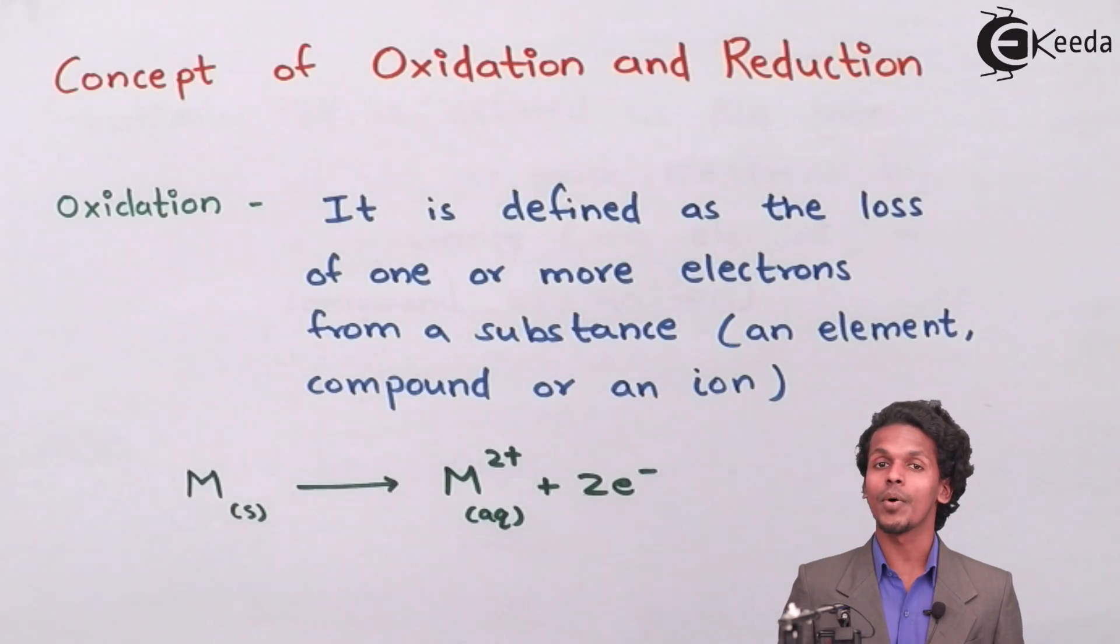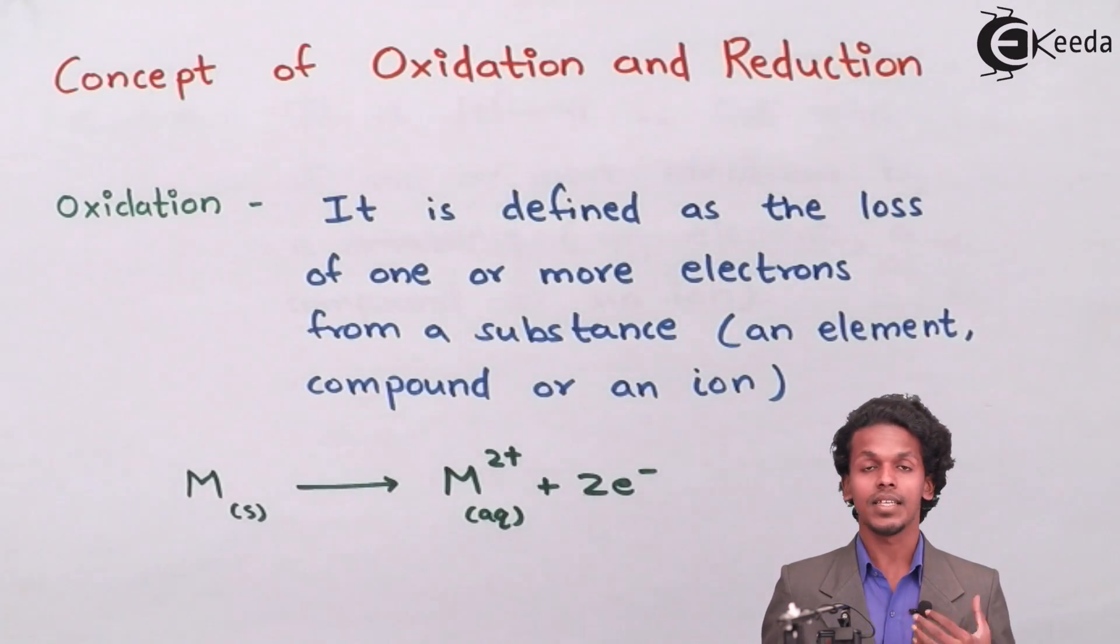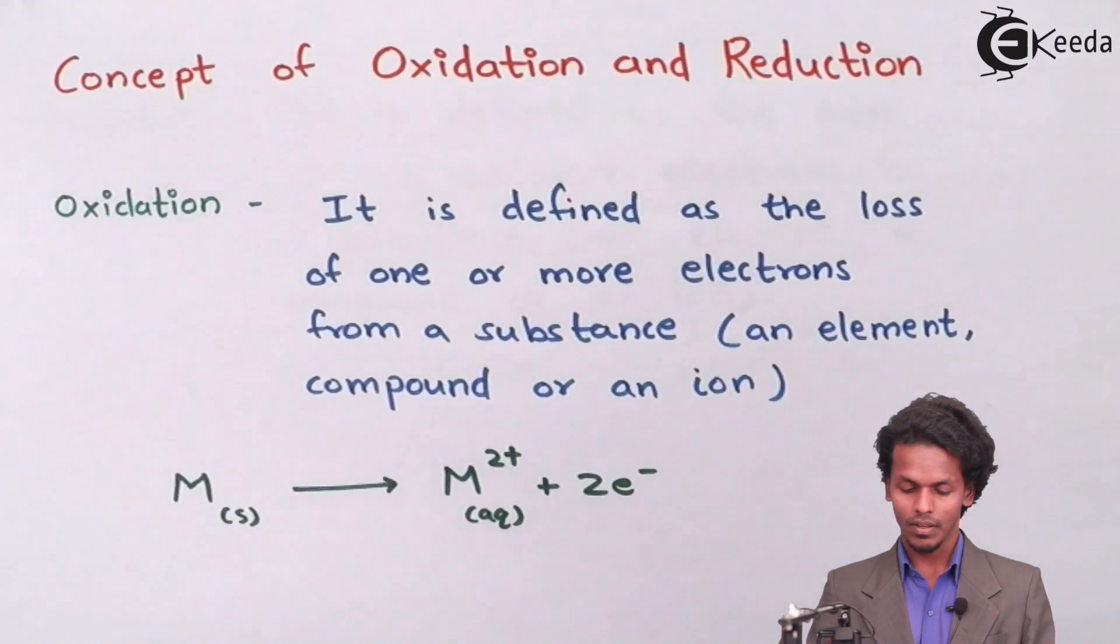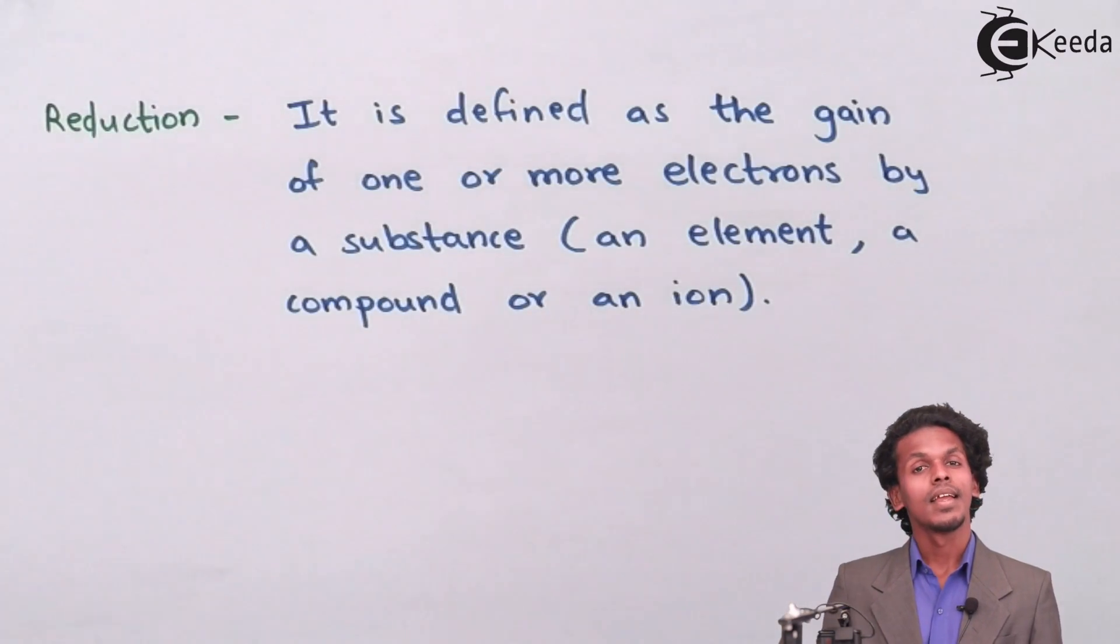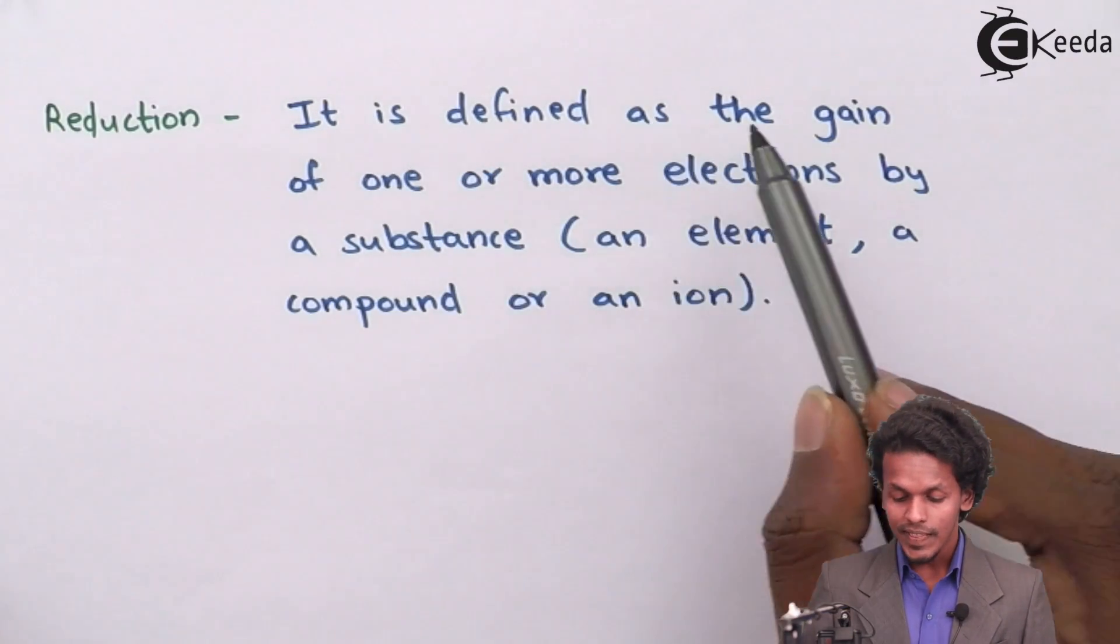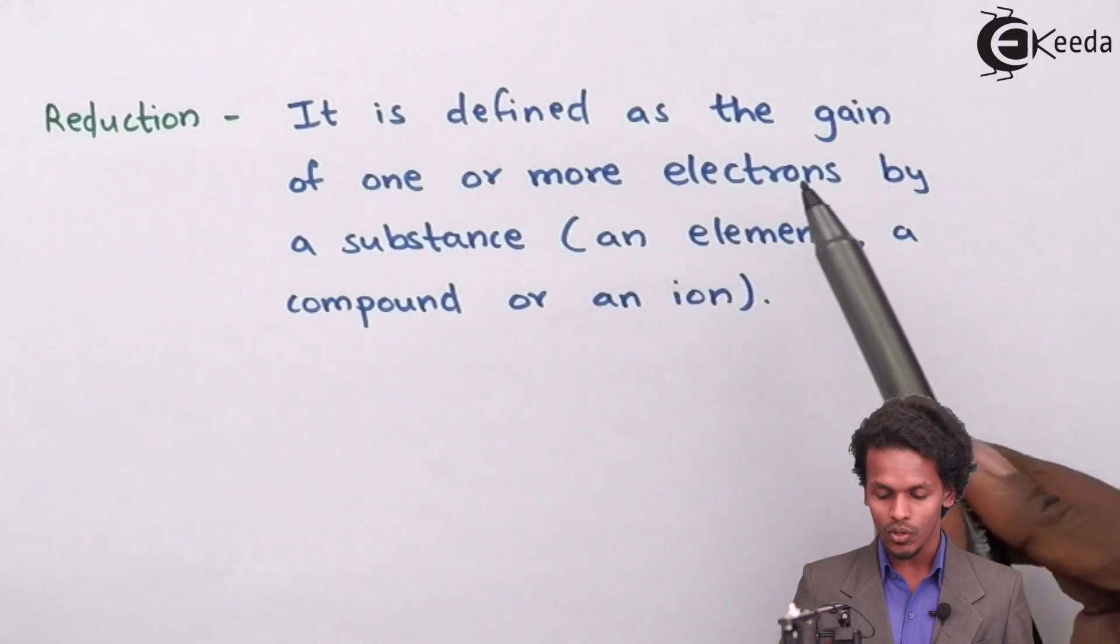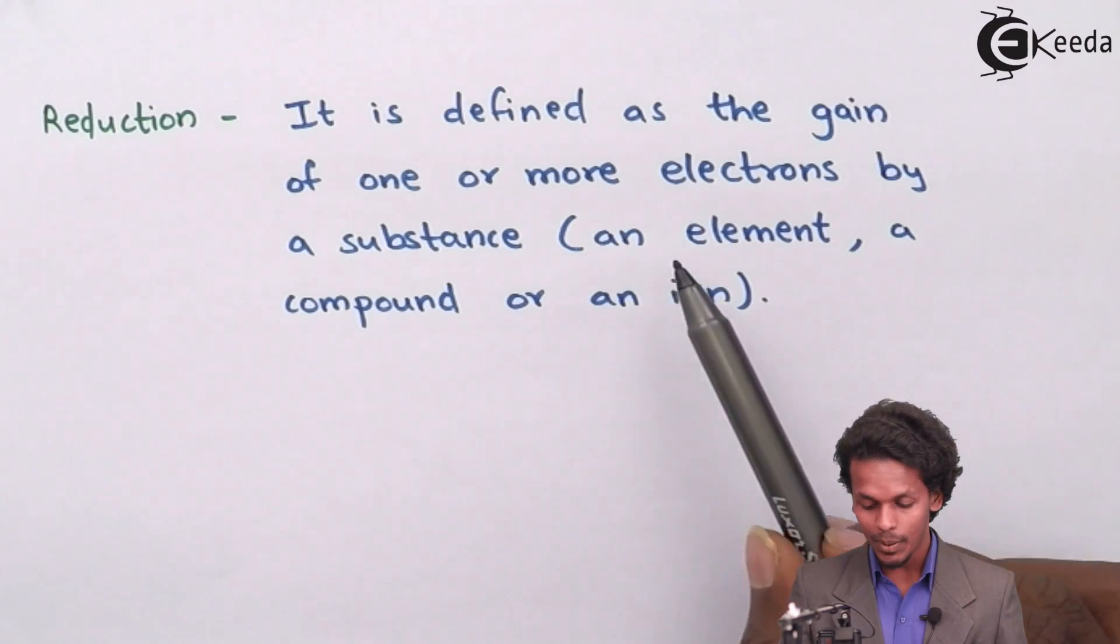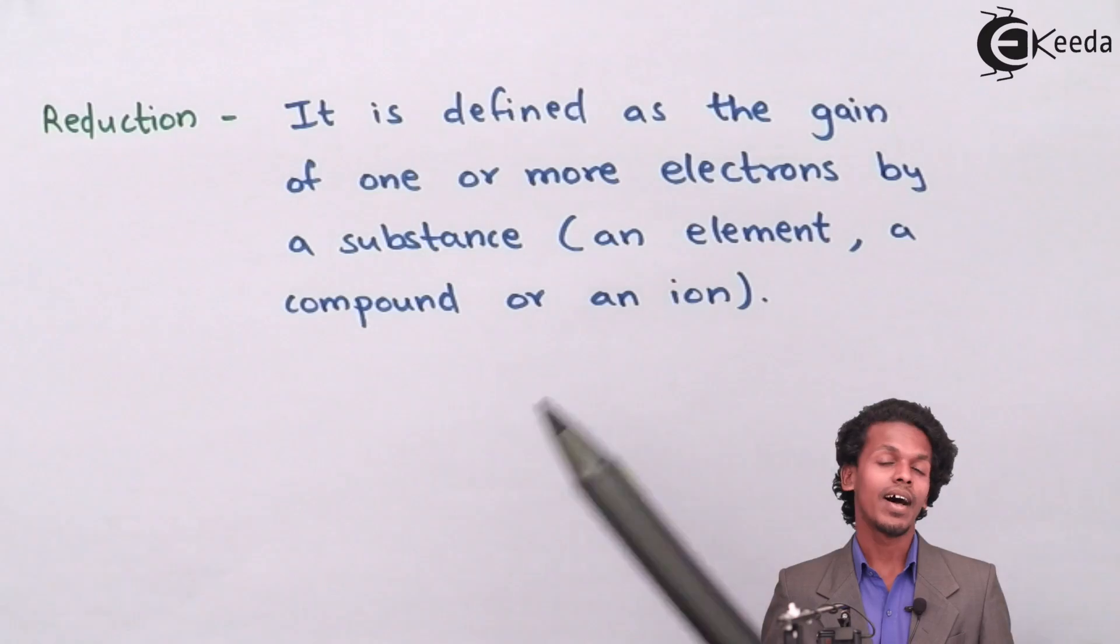Let us now talk about the next definition, that is reduction. It is the opposite of oxidation. It is defined as the gain of one or more electrons by a substance, and that substance again might be an element, a compound, or an ion.